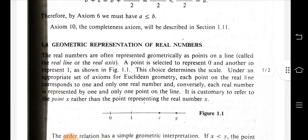Geometric Representation of Real Numbers: Real numbers are often represented geometrically as points on a line, called the real line. A point is selected to represent 0 and another to represent 1, with marks at positions x and y.